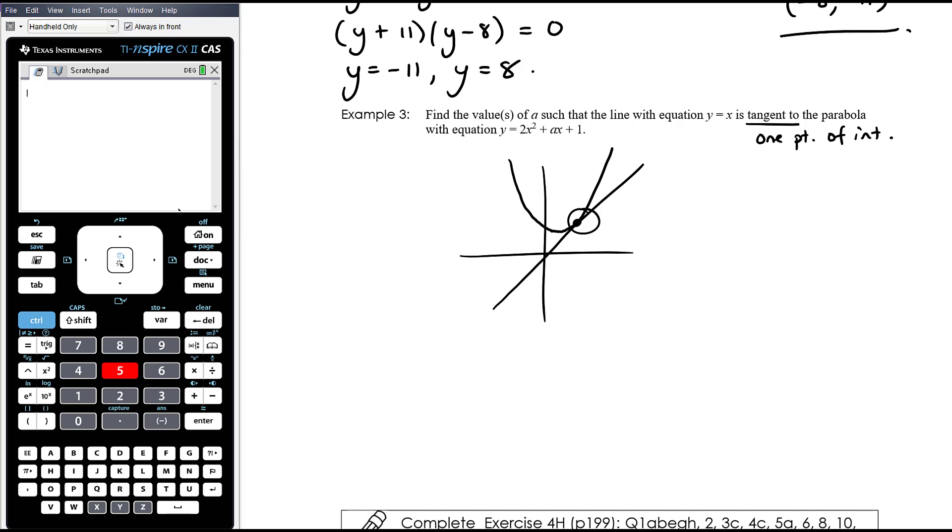So the tangent thing tells us that there's one point of intersection. Okay, that's what's important there. The tangent and the line have to intersect only once. So what we want to do is attempt to find the points of intersection. Okay, so for the points of intersection, we would solve them simultaneously, which in this case means just making them equal to each other.